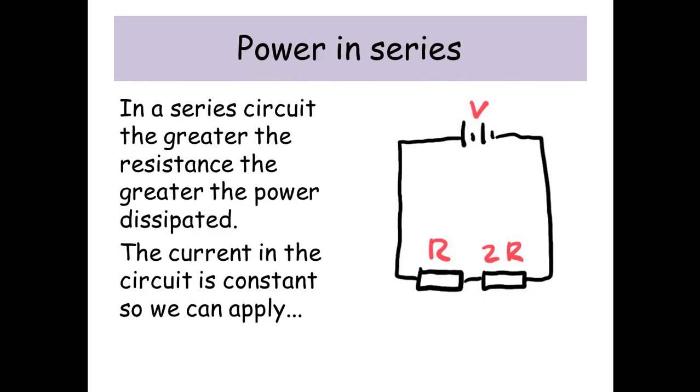In series, the current is the same everywhere. So if the current is the same everywhere, we can apply this formula: P equals I squared R. The I is a constant that doesn't change; the only thing that changes is the resistance. So in a series circuit, the greater the resistance, the greater the power dissipated.